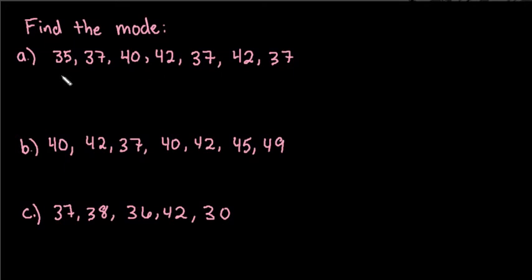For the first one we have the numbers 35, 37, 40, 42, 37, 42, 37. So the mode is simply the number that occurs the most often. In this case that would be 37. 37 repeats three times so our mode would be 37.